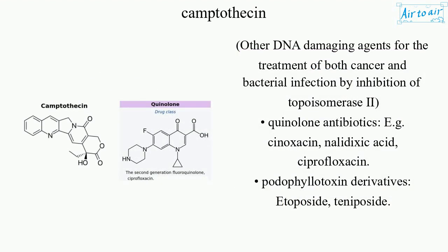Other DNA damaging agents for the treatment of both cancer and bacterial infection by inhibition of topoisomerase II: quinolone antibiotics, e.g. cinoxacin, nalidixic acid, ciprofloxacin; and podophyllotoxin derivatives, etoposide, teniposide.